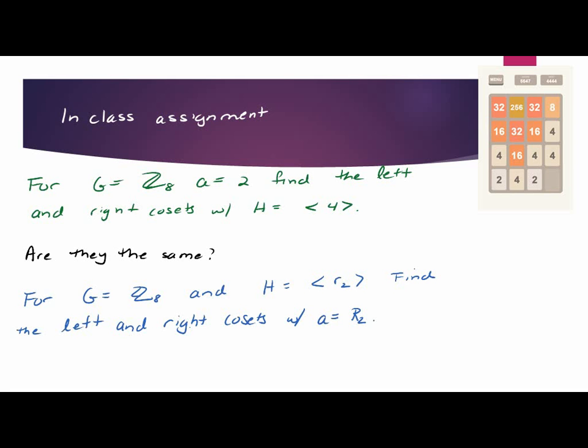I'm going to let you do this one for homework. Try G equals D3 and find the left and right cosets with A equals R2. And H equals the cyclic group of rotations, the cyclic group of reflections, the second reflection through the second vertex.